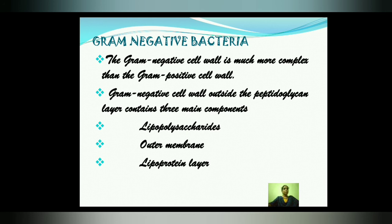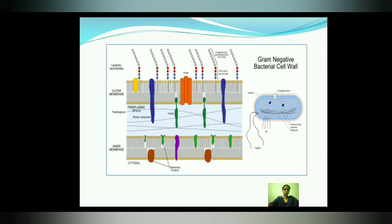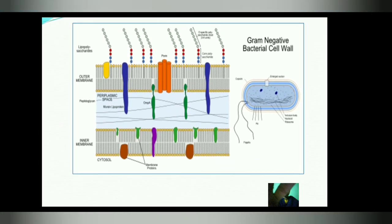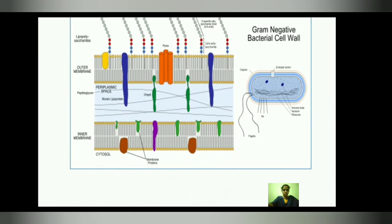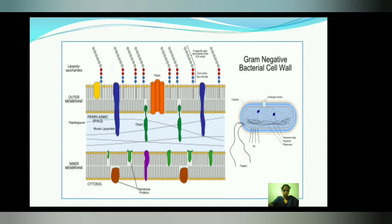The Gram-negative cell wall is much more complex than the Gram-positive cell wall, even though its peptidoglycan layer is thinner. Outside the peptidoglycan layer, the Gram-negative cell wall contains three main components: lipopolysaccharides, outer membrane, and lipoprotein layer. The structure shows the inner membrane, periplasmic space, outer membrane, and lipopolysaccharides.